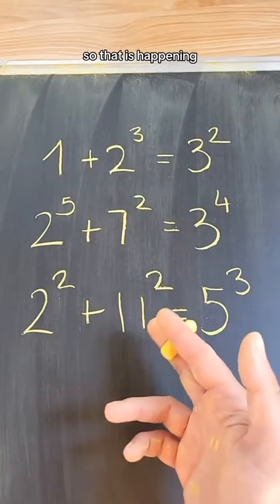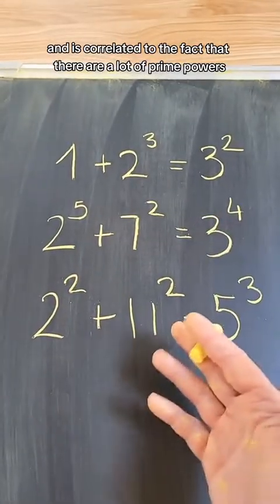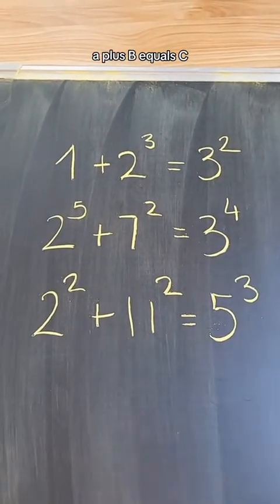So, that is happening and is correlated to the fact that there are a lot of prime powers in the factorizations of each of the three numbers in the equation a plus b equals c.